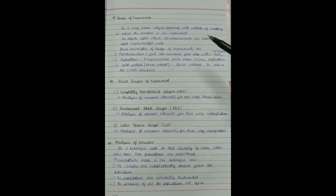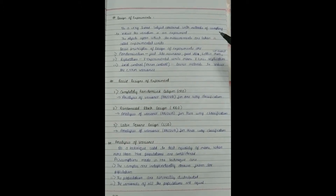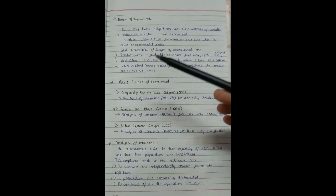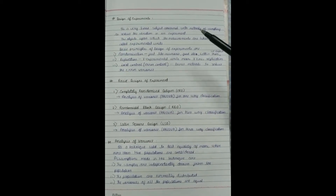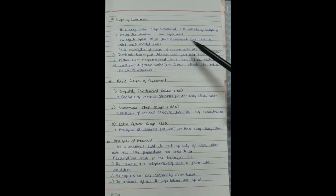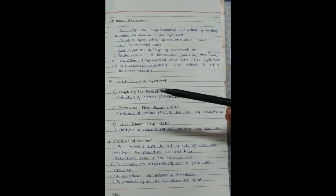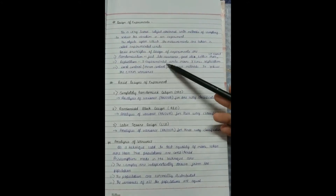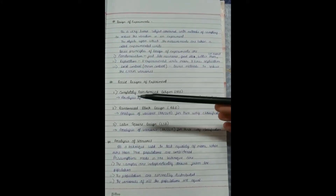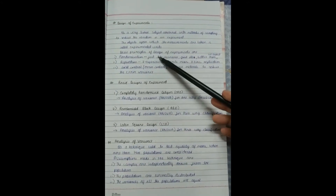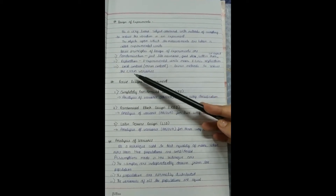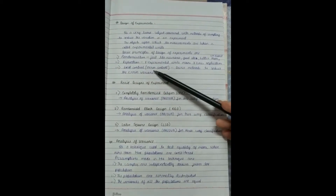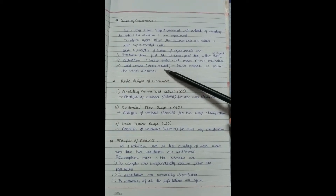Design of experiments is a very broad subject which is concerned with the method of sampling to reduce the variation in an experiment. The objects upon which the measurements are taken are known as experimental units. Under design of experiments there are three basic principles: randomization, replication, and local control, which can also be called error control.